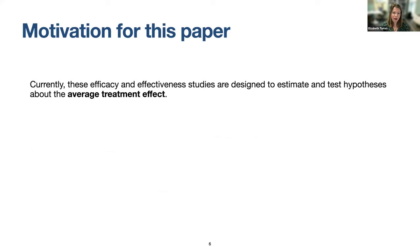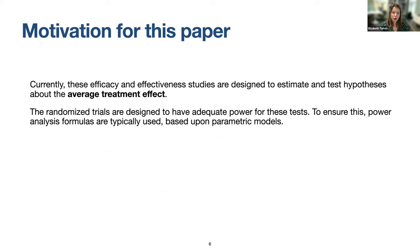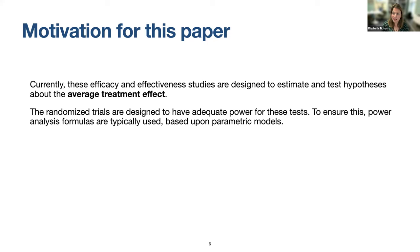Currently, efficacy and effectiveness studies are designed to estimate and test hypotheses about the average treatment effect, sometimes about moderators or subgroup effects. There's a cottage industry of power analysis formulas for all sorts of research designs — two levels of nesting, three levels, partially nested, longitudinal studies — giving closed-form expressions for power in tests of average treatment effects, built into various software programs.